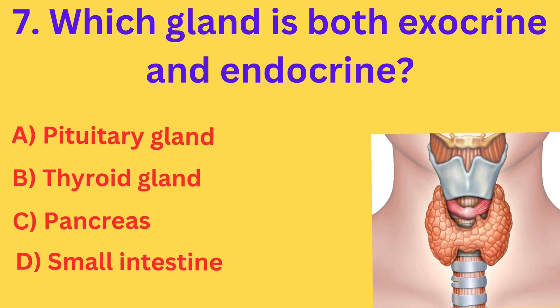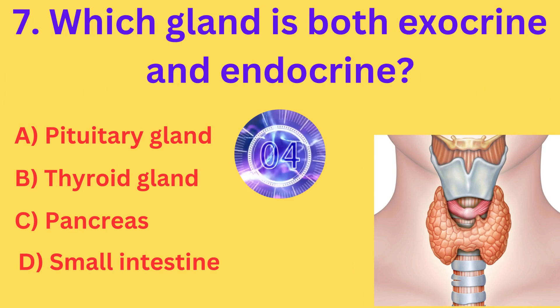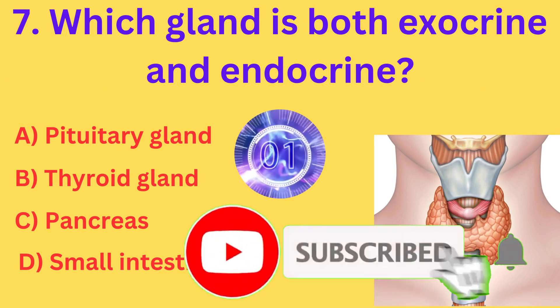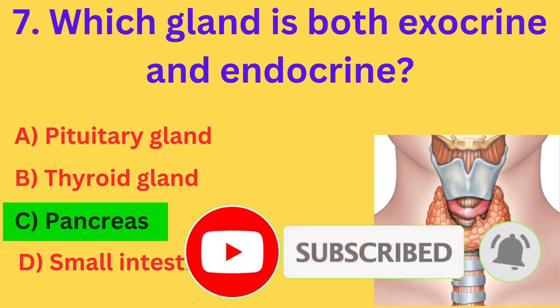Which gland is both exocrine and endocrine? The correct answer is option C, pancreas.